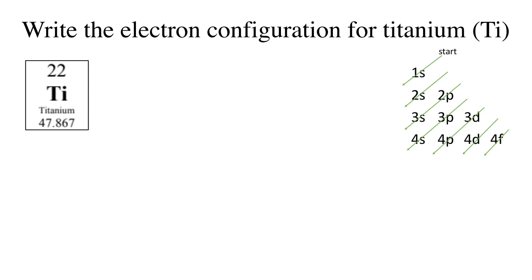Titanium has 22 electrons. The first sublevel is the 1S. An S sublevel can hold a maximum of 2 electrons, so I'll write the superscript 2. Next is the 2S, also an S sublevel, so there will be 2 electrons in there. Follow the next arrow, we get to the 2P. A P sublevel can hold a max of 6 electrons.